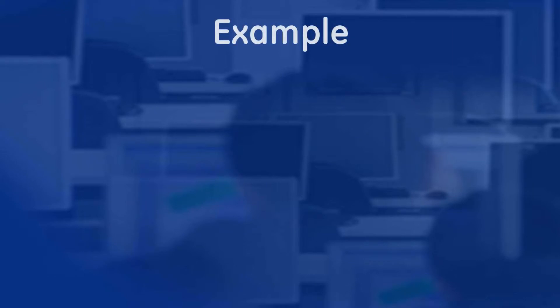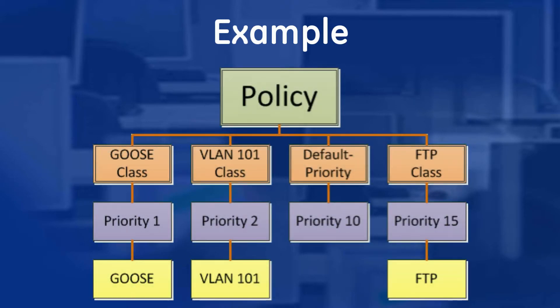Now that we have a basic understanding of how QoS works on the Orbit MCR900, let's look at a more specific example. Let's say that a user wants to prioritize a specific ether type above all other land traffic. In this case, the ether type is Goose. Then the next priority traffic they want is all traffic on VLAN 101. Let's say they also want to give a low priority to FTP traffic. Lastly, all remaining traffic that does not match any of the provisioned classifier needs a priority as well. This is called the default priority and must be set.